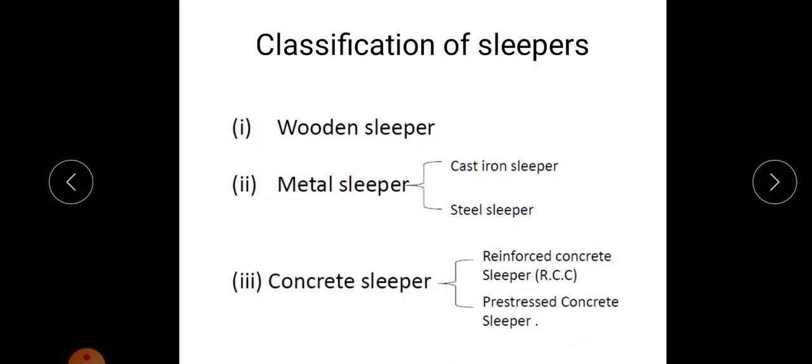Next we can look through the classification of sleepers. Based on the materials by which we are constructing or making the sleepers, it is classified into wooden sleepers, metal sleeper, concrete sleeper. And this metal sleeper is again classified into cast iron sleeper and steel sleeper. Then this concrete sleeper is again classified into RC, reinforced concrete sleeper, and if it is made of pre-stressed concrete, it is known as pre-stressed concrete sleeper. So this classification is based on the material which is used for its construction.